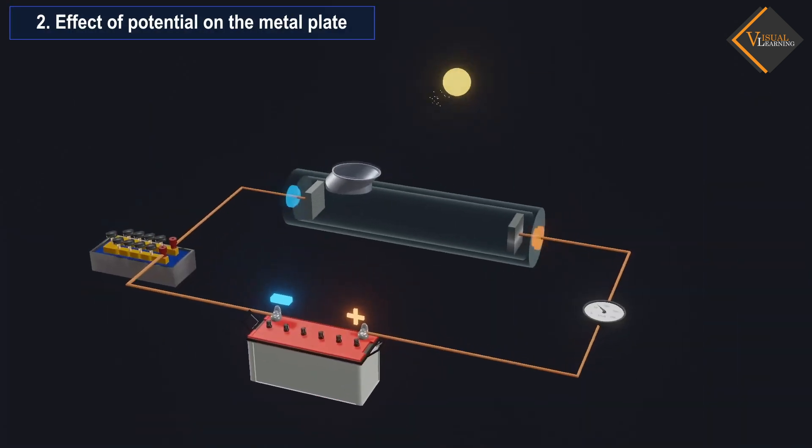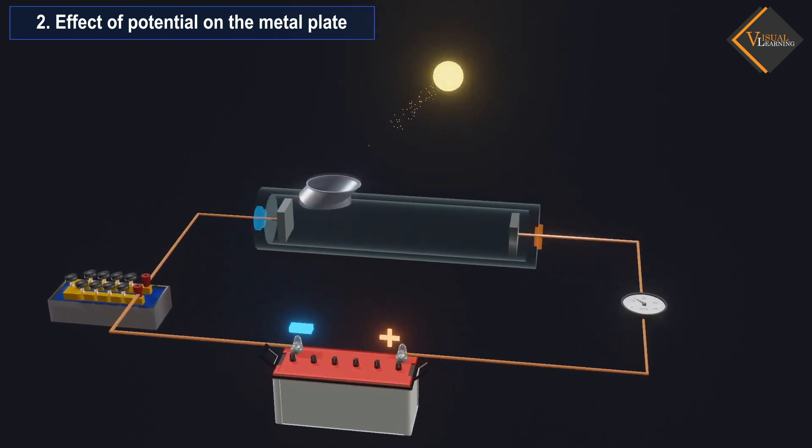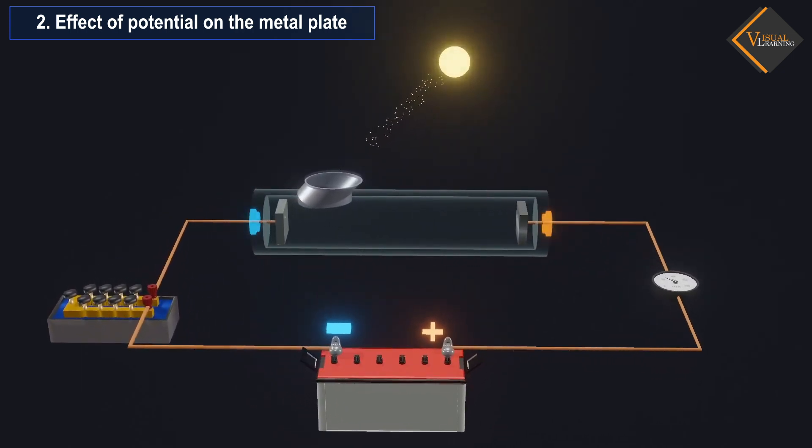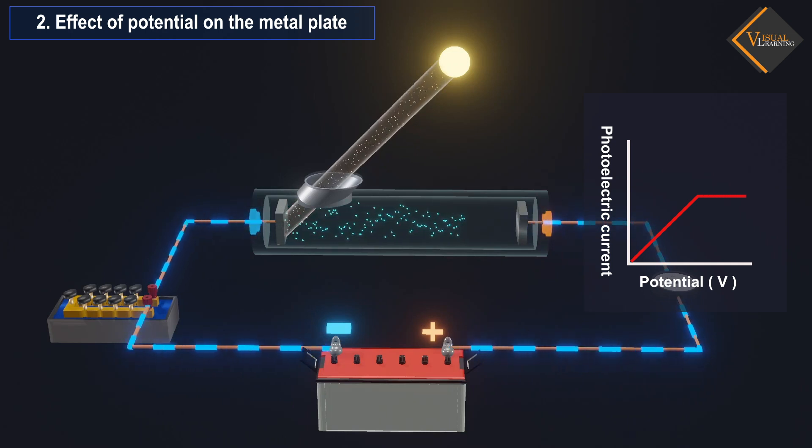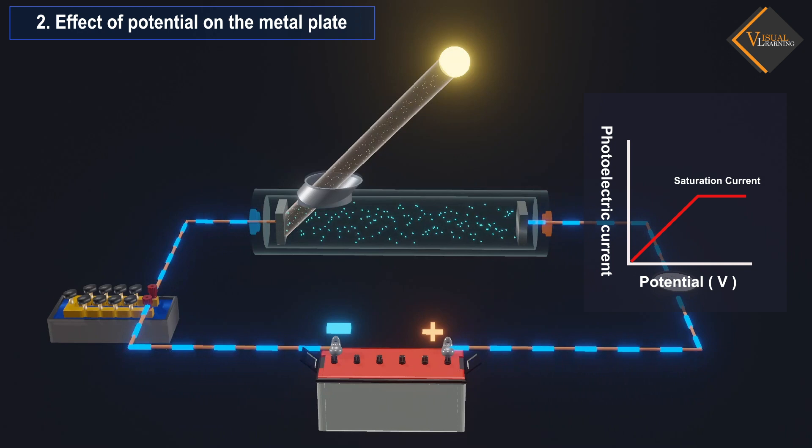Effect of potential on the metal plate: It was found in this experiment that the photoelectric current increases gradually with the potential or voltage. However, after reaching a certain value, increasing the voltage does not cause any further increase in the photoelectric current. This is called saturation current.